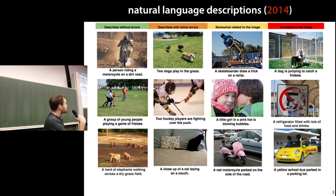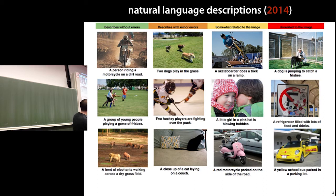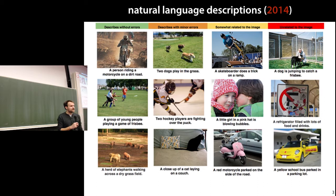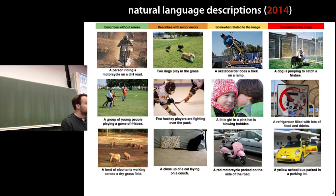This is research from 2014 which aims to automatically annotate images. We have a dataset with images and descriptions, and we feed that to one of these deep learning systems with no extra information — no information about what's in the pictures, how to interpret them, or how language works. Eventually the model learns to describe new pictures, generating a natural language sentence. These examples are quite accurate: 'person riding a motorcycle on a dirt road.'